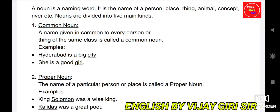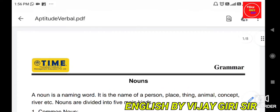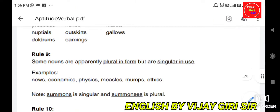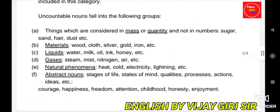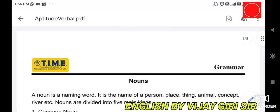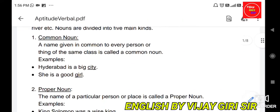Another example: 'She is a good girl.' Here, girl can be any girl. It refers to the whole class — anyone belonging to the class of girls. So this is called common noun.